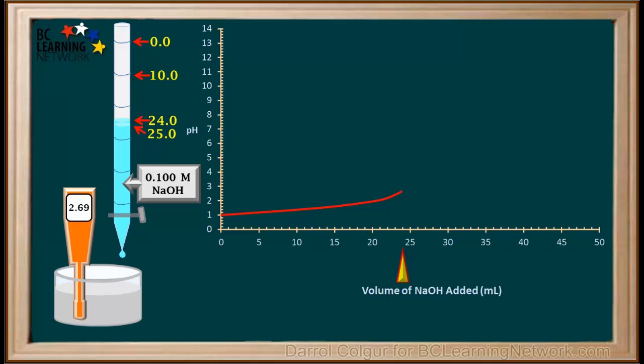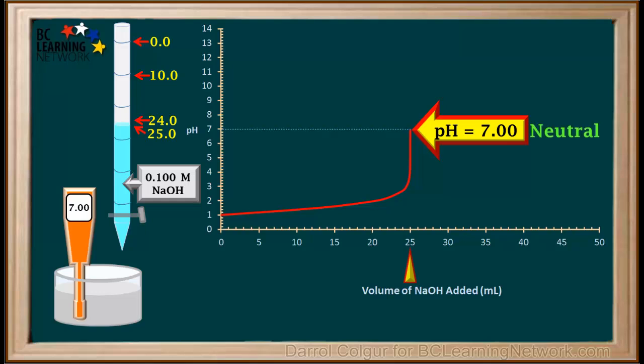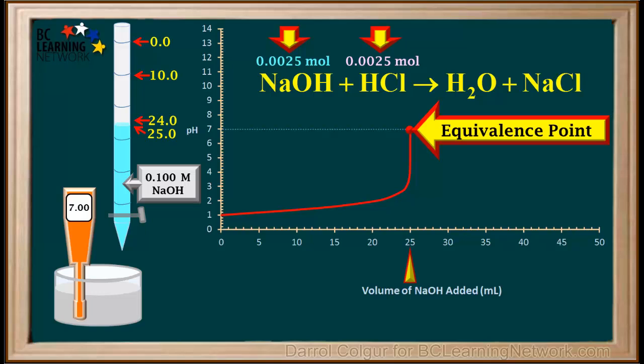Now we'll slowly add just one more milliliter of NaOH to give us a total of 25 milliliters of NaOH added. Notice how quickly the pH rises here. The pH at this point has gone all the way up to 7. At 25 degrees, a pH of 7 means the solution is now neutral. This is a special point in this titration — it's called the equivalence point.